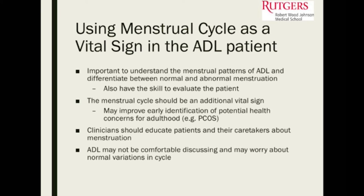Polycystic ovarian syndrome can be identified through monitoring the menstrual cycle, and it can put patients at risk for other health conditions later in life — like diabetes, cholesterol problems, and hypertension.